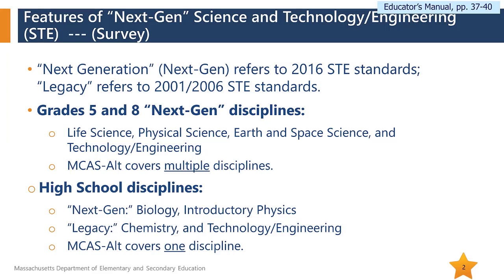For grades 5 and 8, we have next-gen disciplines. For high school, we have next-gen and legacy. Next generation refers to the 2016 Science and Tech Engineering Standards. Legacy refers to the 2001-2006 Science and Tech Engineering Standards, and legacy is only in the high school discipline. Grades 5 and 8 have a choice of Life Science, Physical Science, Earth and Space Science, and Tech Engineering. In high school, you're covering one discipline — for next-gen it's either Biology or Introductory Physics; for legacy it's Chemistry and Tech Engineering. Grades 5 and 8 have multiple disciplines; high school has one.